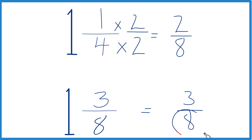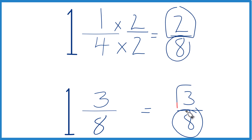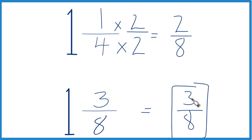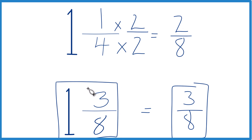Now that we have the same denominators, we just compare the numerators. Three is greater than two, so three-eighths is greater than two-eighths — only by one-eighth, but it's still bigger. Since these are equivalent, we can say that one and three-eighths is larger than one and one-fourth. That's it.